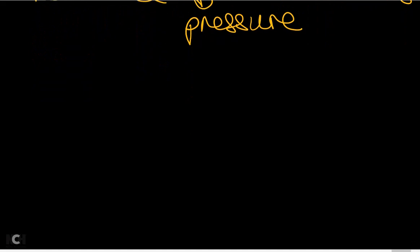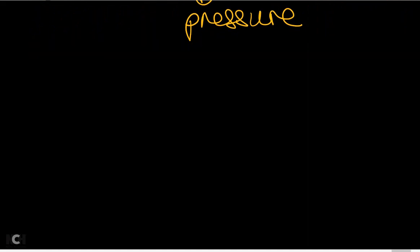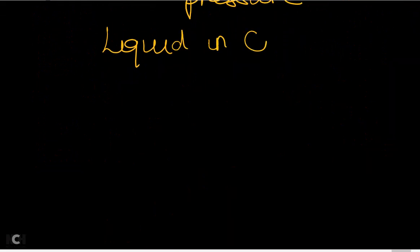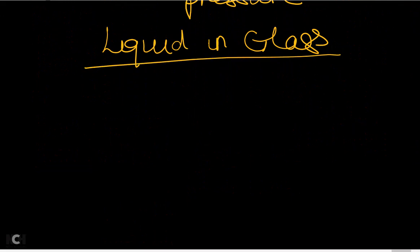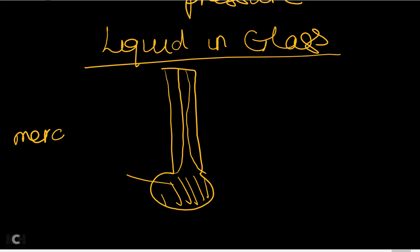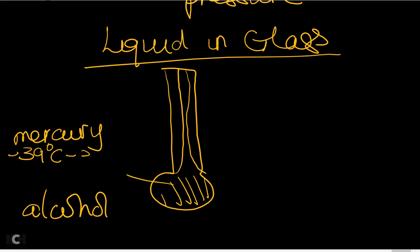Focusing on the liquid-in-glass thermometer — including both the lab thermometer and the clinical thermometer — you can use either mercury or alcohol. Mercury has a melting point of −39°C and goes up to 357°C, while alcohol ranges from −115°C to 78°C. Mercury allows measurement of very high temperatures; alcohol allows measurement of very low temperatures.